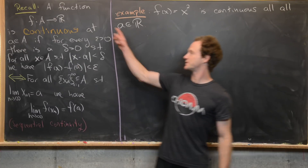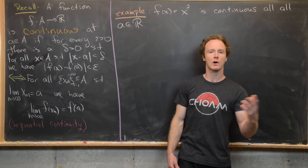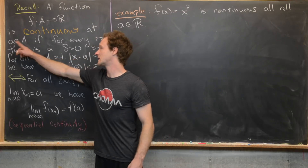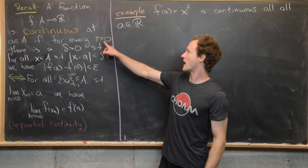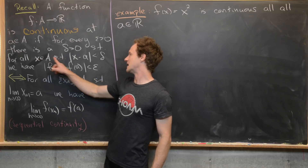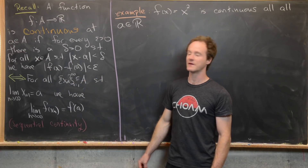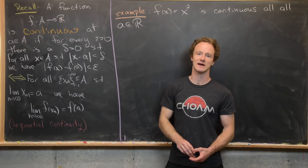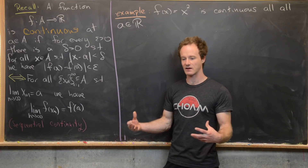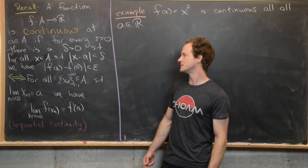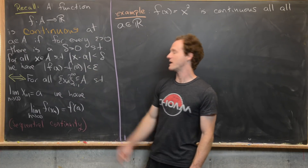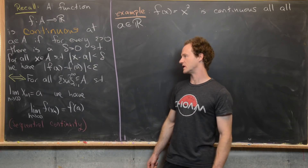So the definition goes like this. A function f from A to ℝ, where A is a subset of the real numbers, is continuous at a point a in A if for every ε > 0 there is a δ > 0 such that for all x in A where |x − a| < δ, we have |f(x) − f(a)| < ε. So in other words, any ε challenge you give me, I can return a δ answer so that the function value is within ε of f(a) whenever x is within δ of a.